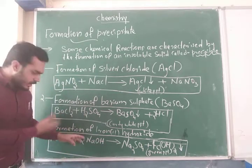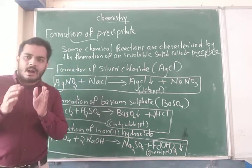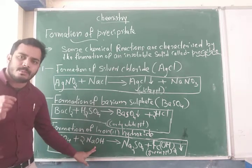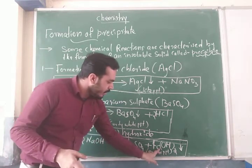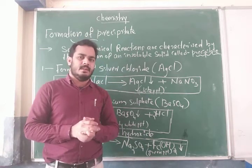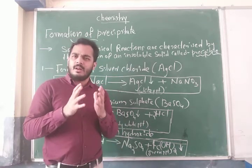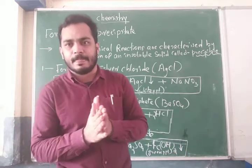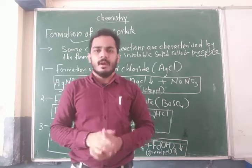Now the third one: formation of iron hydroxide. Here the reactants are iron sulfate and sodium hydroxide. These react to form sodium sulfate and iron hydroxide. The iron hydroxide is the precipitate in this reaction. What is the color of the iron hydroxide? Clearly, that is a green precipitate. So in this reaction, the precipitate is formed in green color. You should identify that green color is denoted for iron hydroxide.